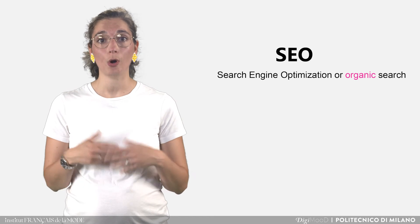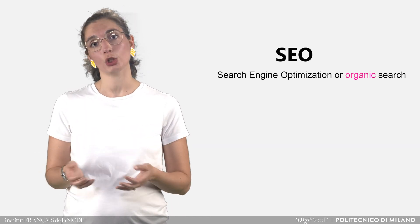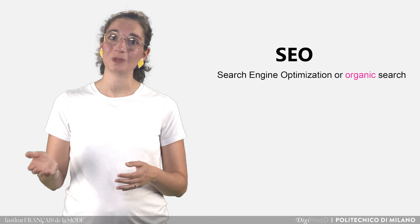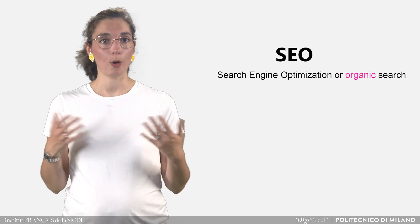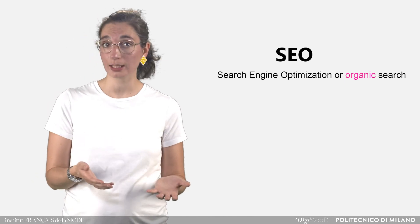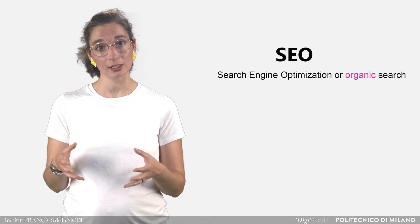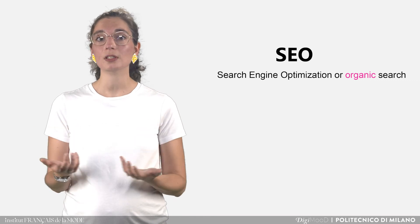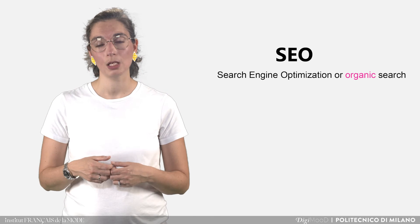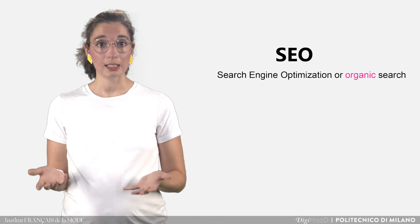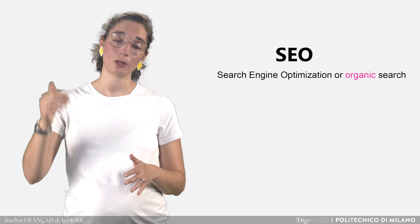SEO, also called Organic Search, is a collection of techniques used to make sure your website comes as high as possible on the search results page. Among those techniques, a good website architecture is critical, as well as solid written content on the site, and ensuring the site is linked from as many external sources as possible. These techniques are free, but do not guarantee your visibility at the top of the results page.